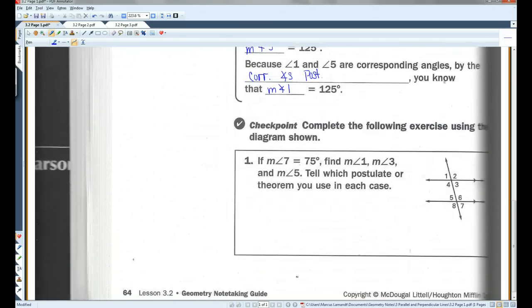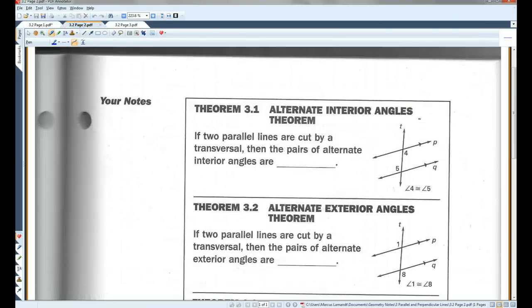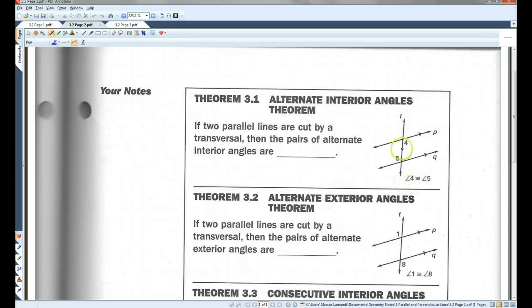Okay, I'll let you guys do this checkpoint problem. Let's go on to page 2. Theorem 3.1: If two parallel lines are cut by transversal, then the pairs of alternate interior angles are congruent.